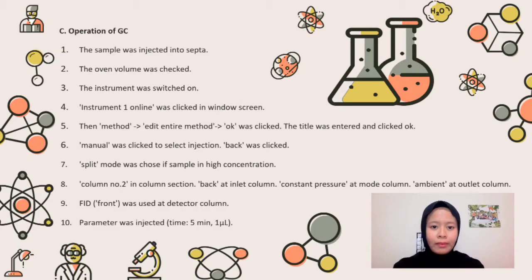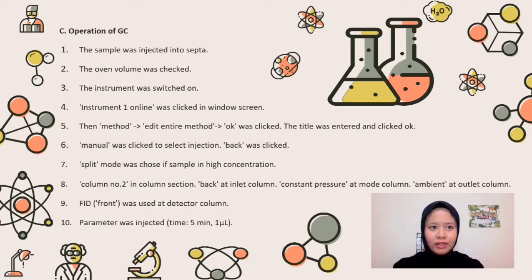Part C: Operation of GC. Step 1: The sample was injected into the inlet liner. Step 2: The oven volume was checked. The instrument was made sure to be in off mode. Step 3: The instrument was switched on. A warning will ring if the gas is not enough. Step 4: Instrument 1 online was clicked in the window, and the instrument was allowed to set up itself.